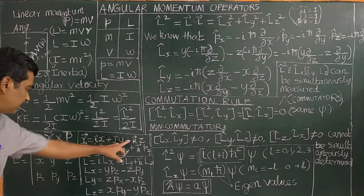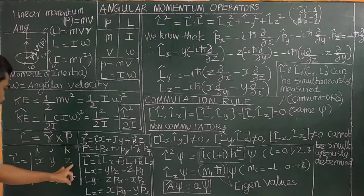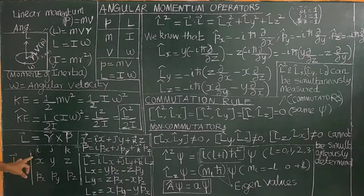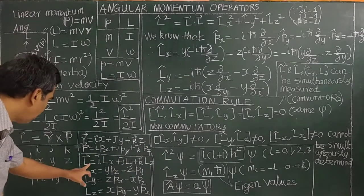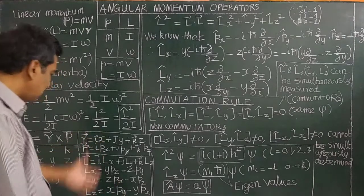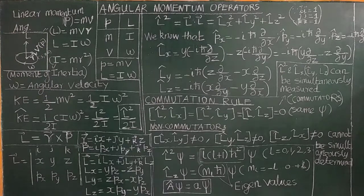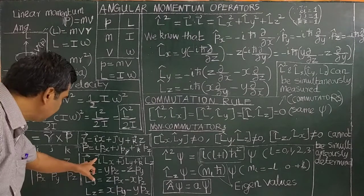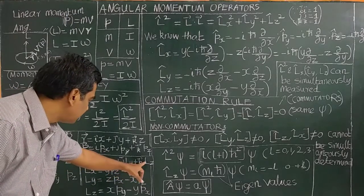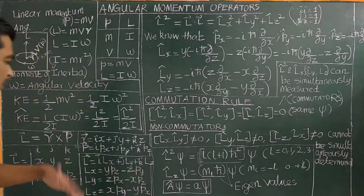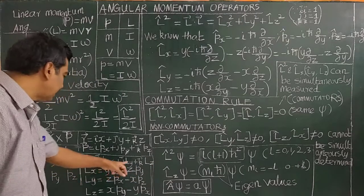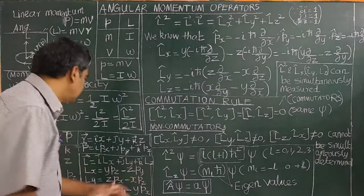Therefore, L vector — the angular momentum vector — is also a vector quantity. It consists of three components: i-vector Lx plus j-vector Ly plus k-vector Lz. There are three components along the x-axis (Lx), y-axis (Ly), and z-axis (Lz). The angular momentum vector L is the cross product of r and p.